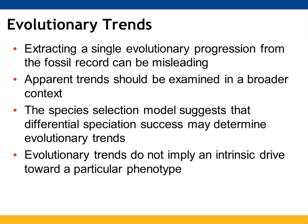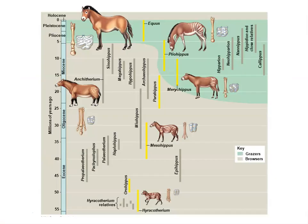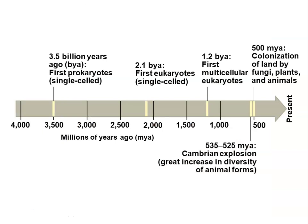Trying to understand evolutionary progression just from the fossil record is not always the best approach — we need to look at things more broadly. The species selection model suggests that differential speciation success can influence evolutionary trends, but the trends themselves do not imply a direction for a specific phenotype. Horse evolution data illustrates various evolutionary changes over time, and we conclude with a summary of when all these key events took place.